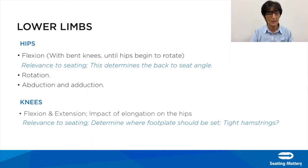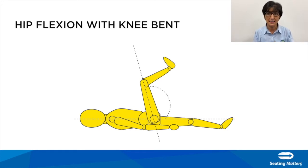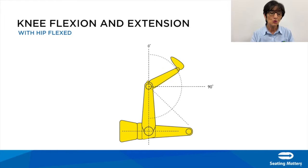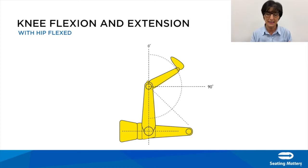Then look at the lower limbs, starting with hip flexion — always with the knees bent. When you over-flex the hip, the hips begin to rotate, which in sitting gives the person a hip rotation, so don't over-flex. Next, look at knee flexion and extension — you must have the hip flexed in order to test this, as it determines where you put your foot plate and leg rest. I'll demonstrate with a goniometer how to measure these angles in the practical demo.